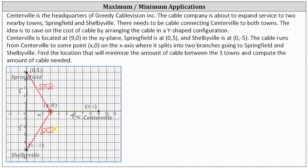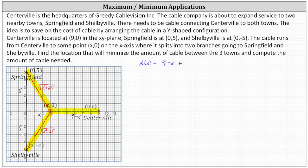We now have enough information to write a function representing the total amount of cable. Using D of X: starting at Centerville, the distance to the split point is 9 minus X, plus the two distances from the split to the two towns, which is 2 times the square root of the quantity X squared plus 25. So D(x) = (9 - x) + 2√(x² + 25).